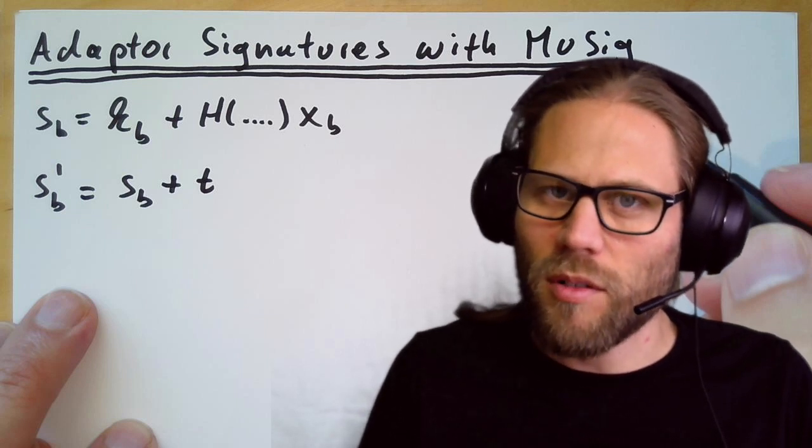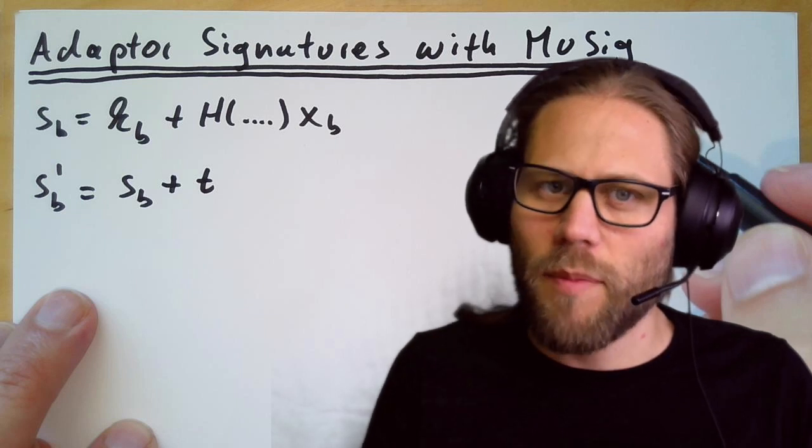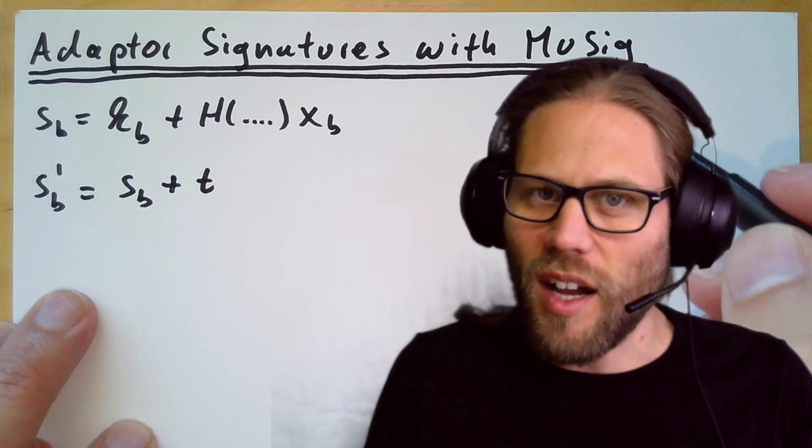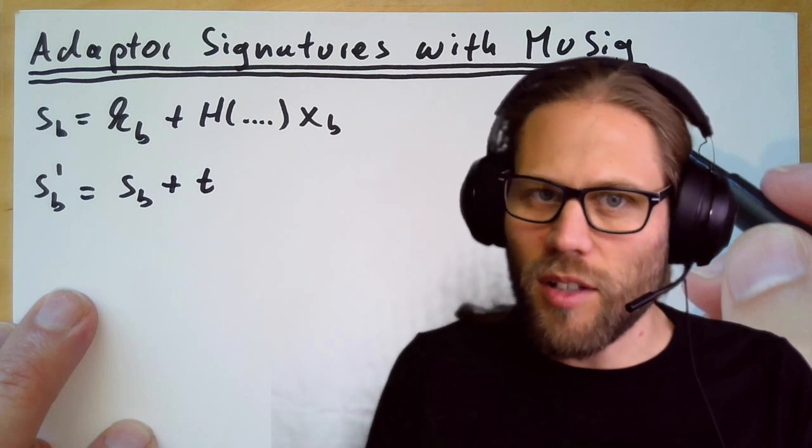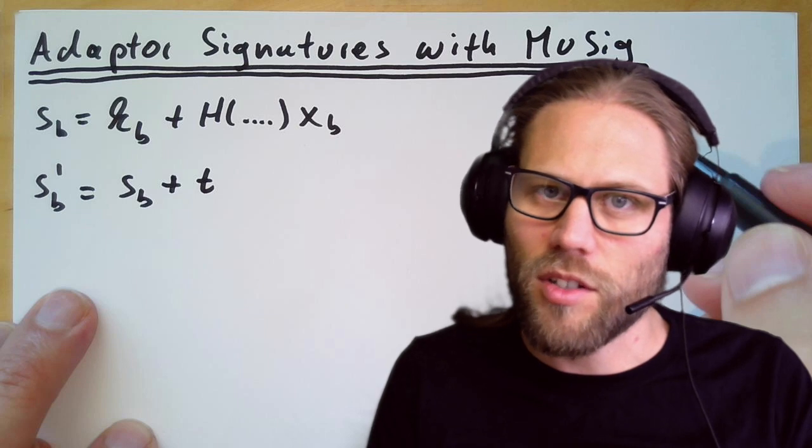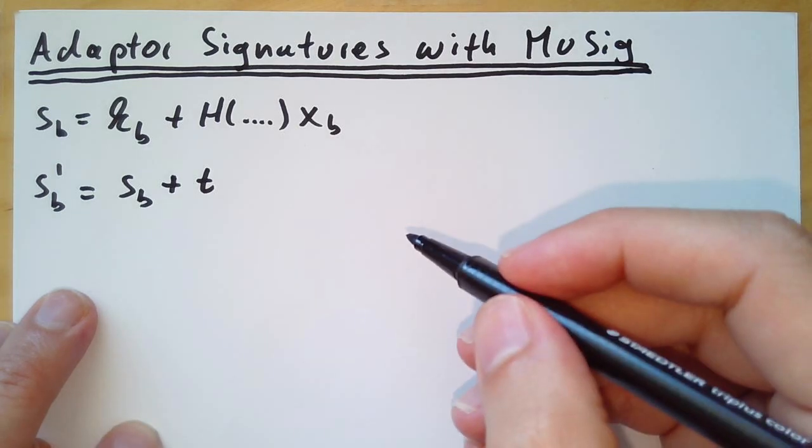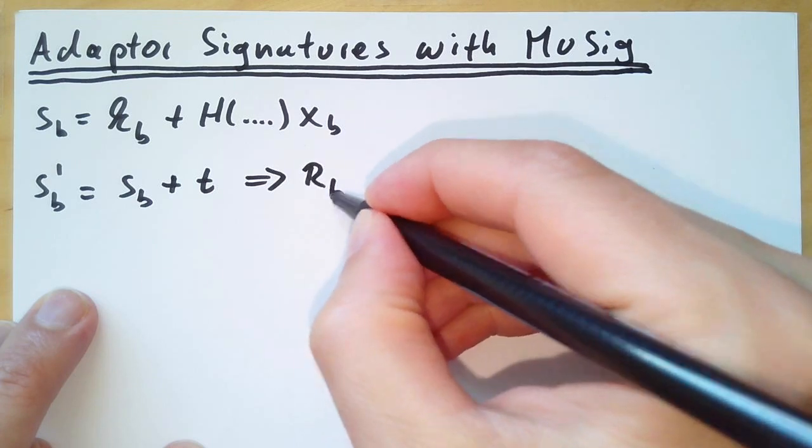But if we remember what a complete signature is, it's not only the s value but also the r value, which committed to the k value. Now our random k value has this t part in it, so let us see how the r value changes. I claim that you would have to change the r value according to what you added to the nonce.